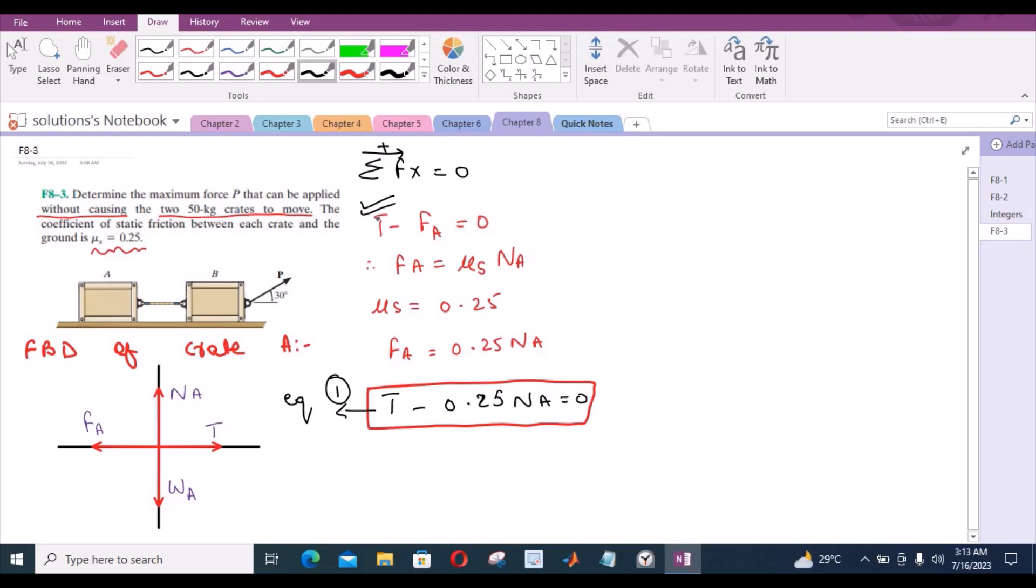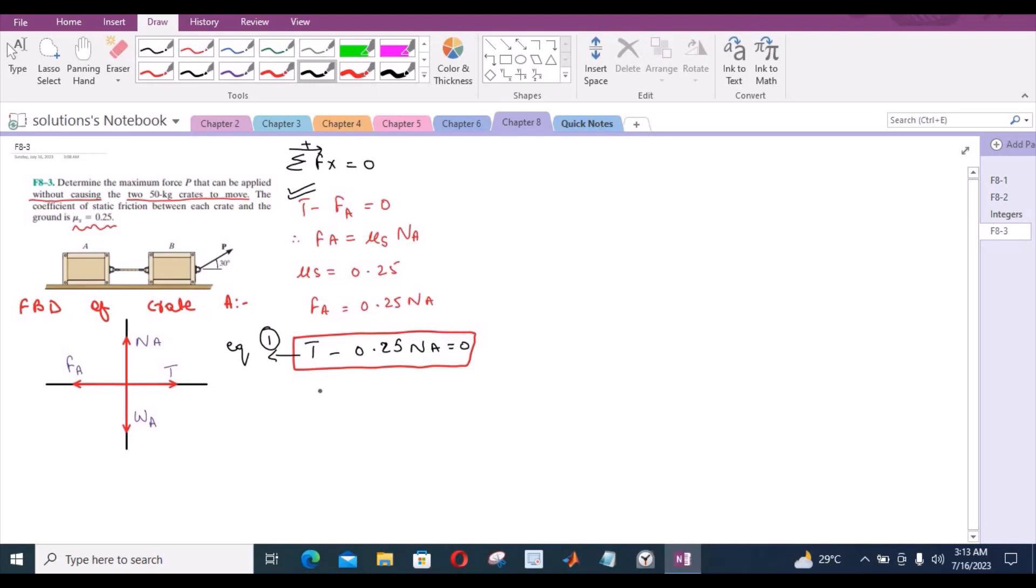But we can see that we have two unknowns and one equation. So we need another equation. So our second equation would be sum of the forces in y direction equals to 0. I'm considering up direction as positive. So we have NA minus WA equals to 0. We can find the weight of crate A by multiplying mass, that is 50 kg, by acceleration due to gravity. So weight for crate A becomes 490.5 Newtons. So from this equation, NA becomes 490.5 Newtons.